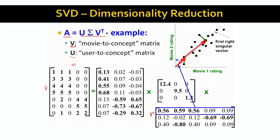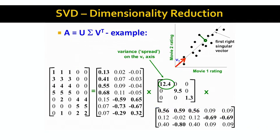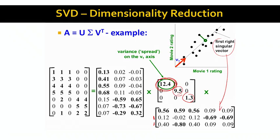In our old example of users to movies represented in SVD, the first right singular vector gives us the axis on which we want to project, and the corresponding singular value tells us the variance along that dimension. In our two-dimensional case, the values are really spread around the first singular vector, spread a bit less around the second singular vector, and not really spread around the third singular vector — so the importance of that vector is very small.